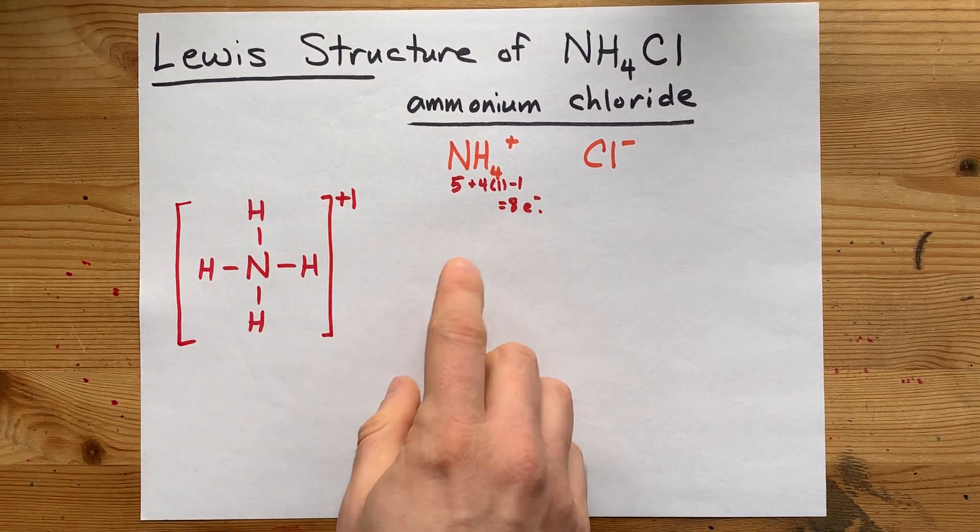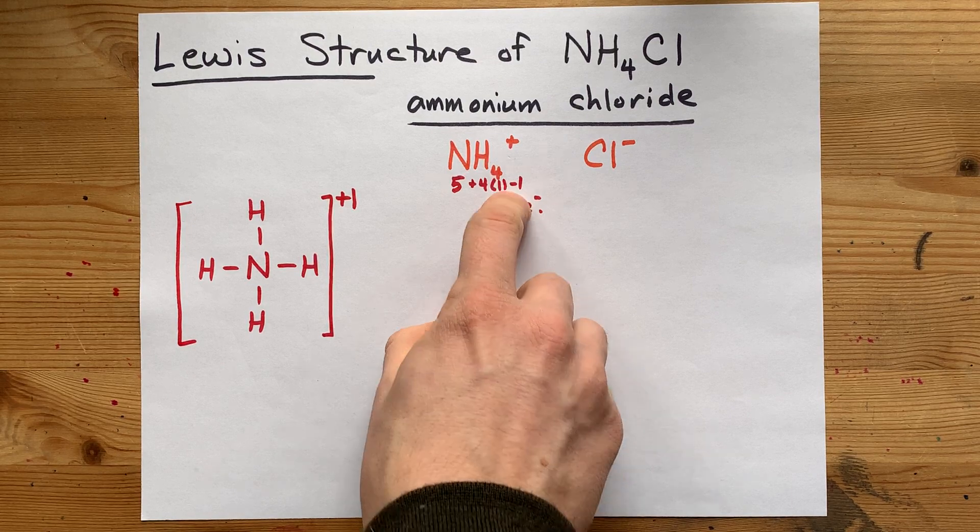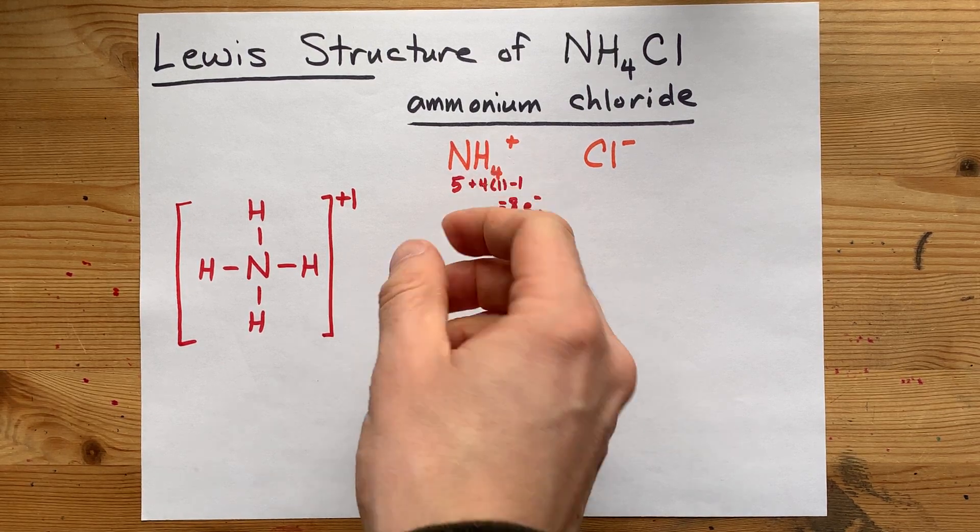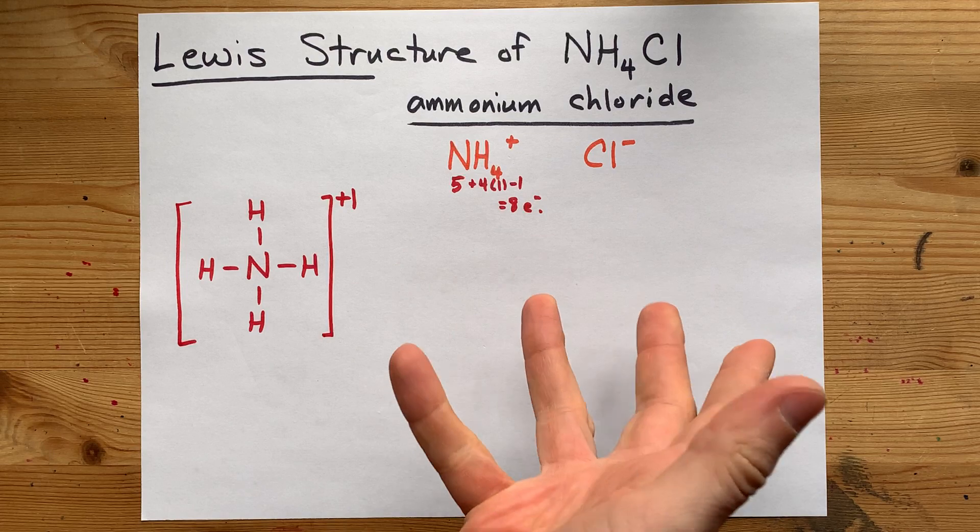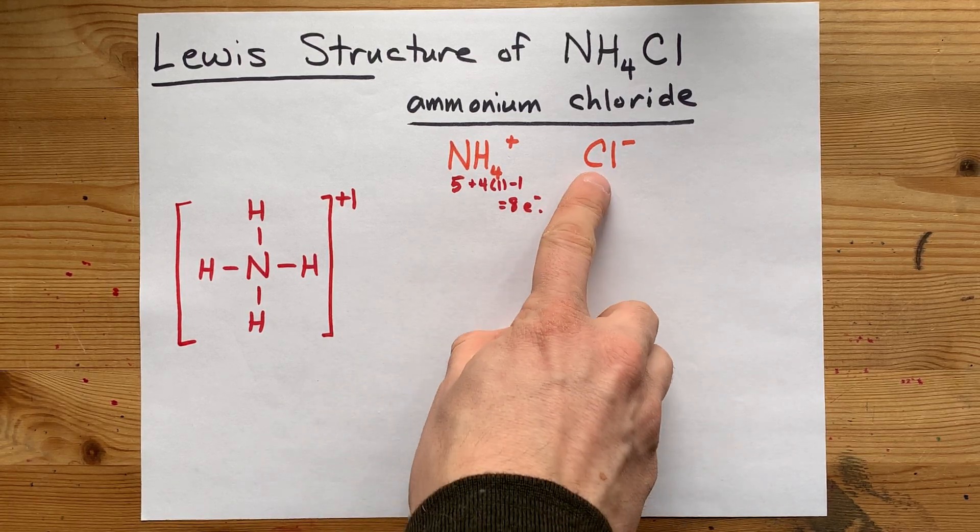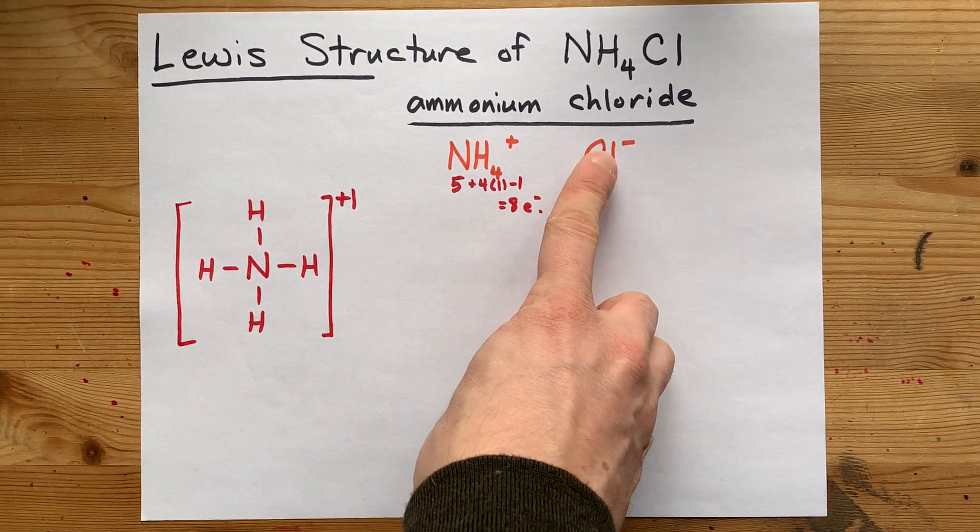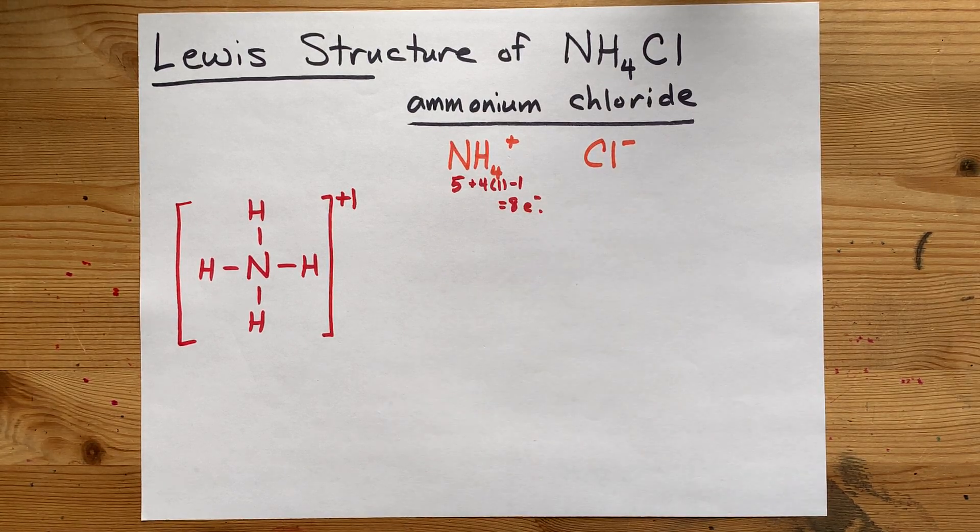Now, where do you suppose that one electron went? This had a positive one charge, so an electron was taken away from it. Well, the answer is it went probably to this chlorine, which has one extra electron compared to when it started.